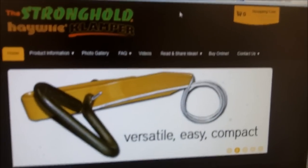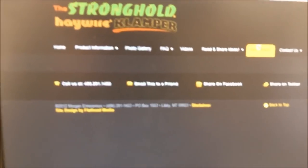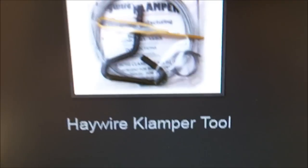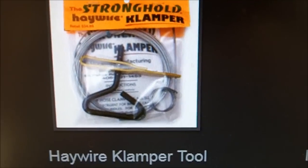There it is. We'll click on Buy Online. And as you can see, there are two versions here. There's the regular Haywire Clamper tool, which sells for just under $25.